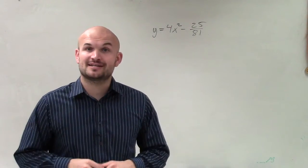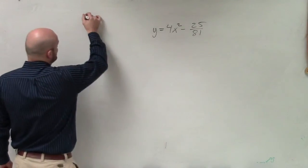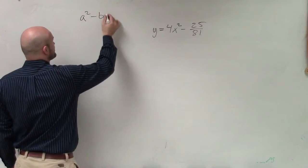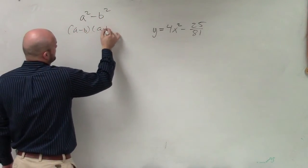And what I want to do is see if I can solve this by factoring using the difference of two squares. So remember the form of difference of two squares, which I just erased, which is a squared minus b squared, can be factored into a minus b times a plus b.